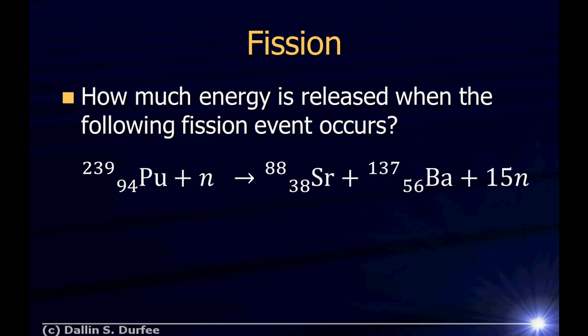So here's the same reaction. Plutonium splits, becomes strontium and barium. How much energy is released when the following fission event occurs? I know in my table I've got masses. The energy released is just delta M times C squared, just like we did on the last assignment.